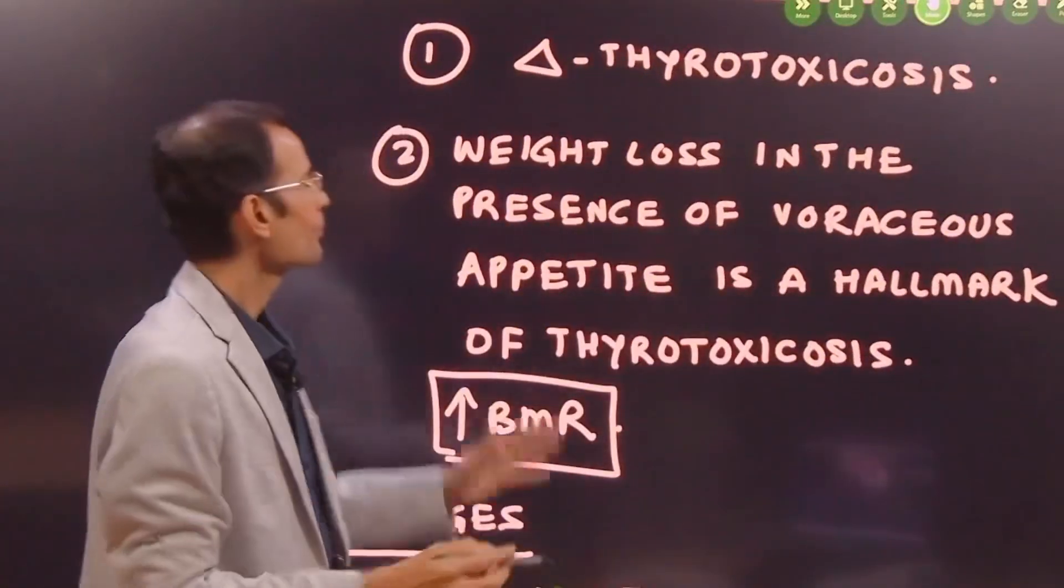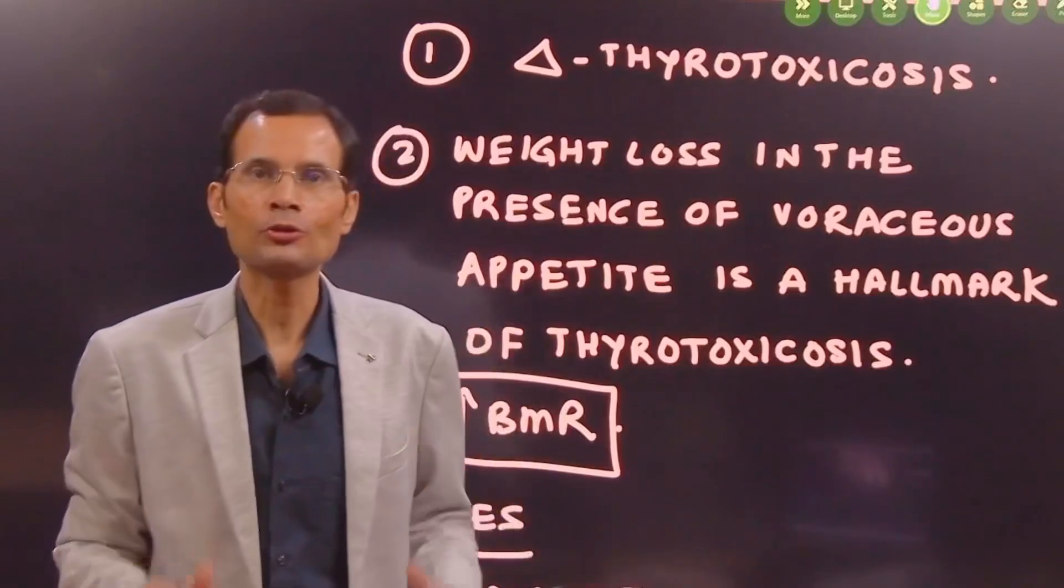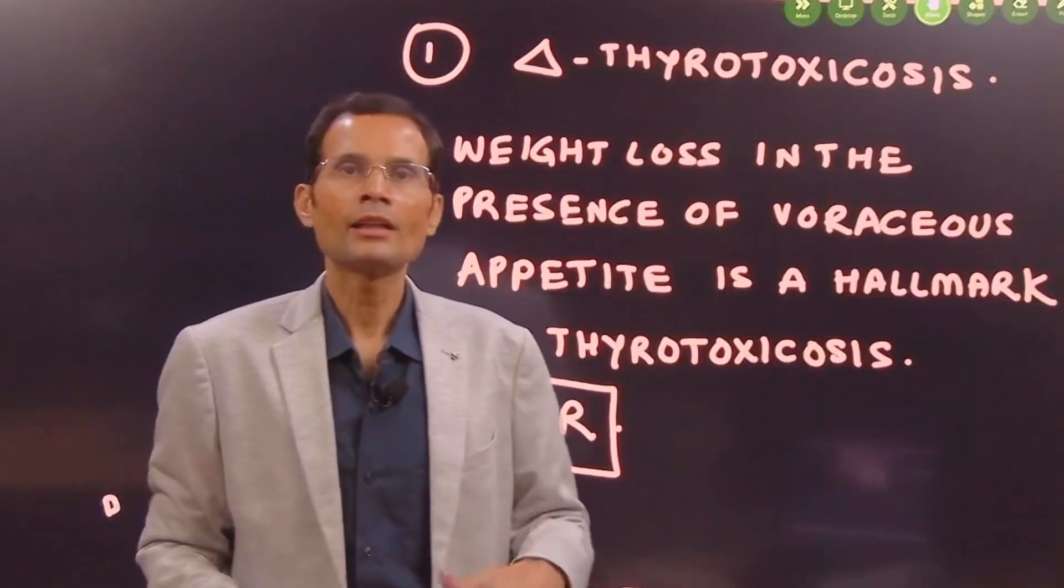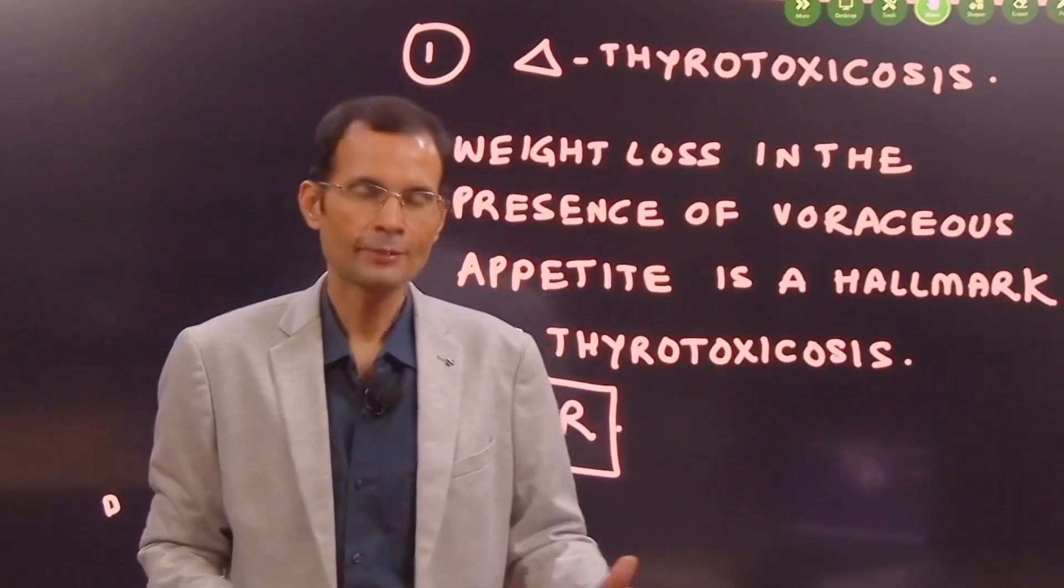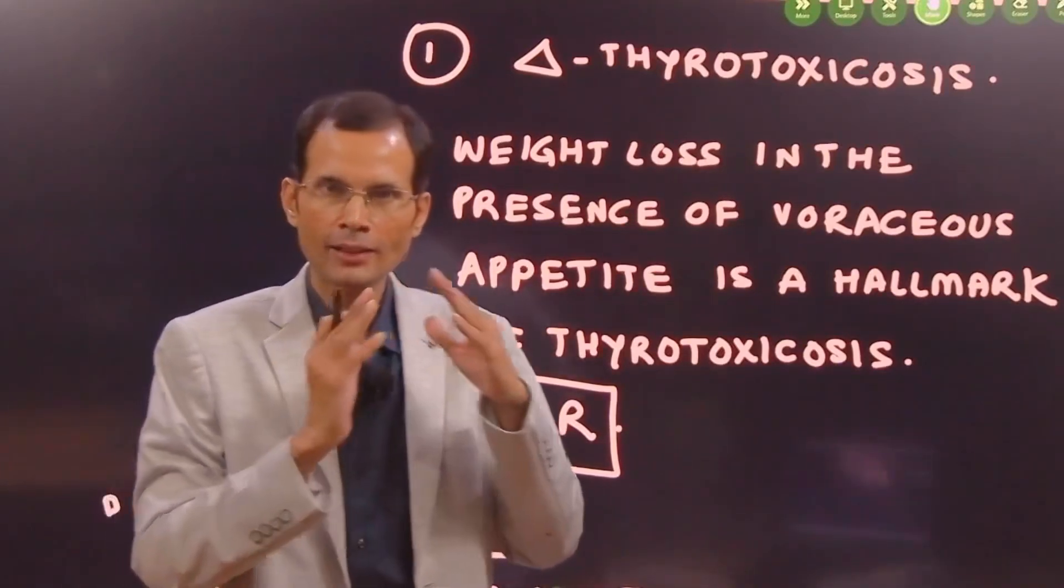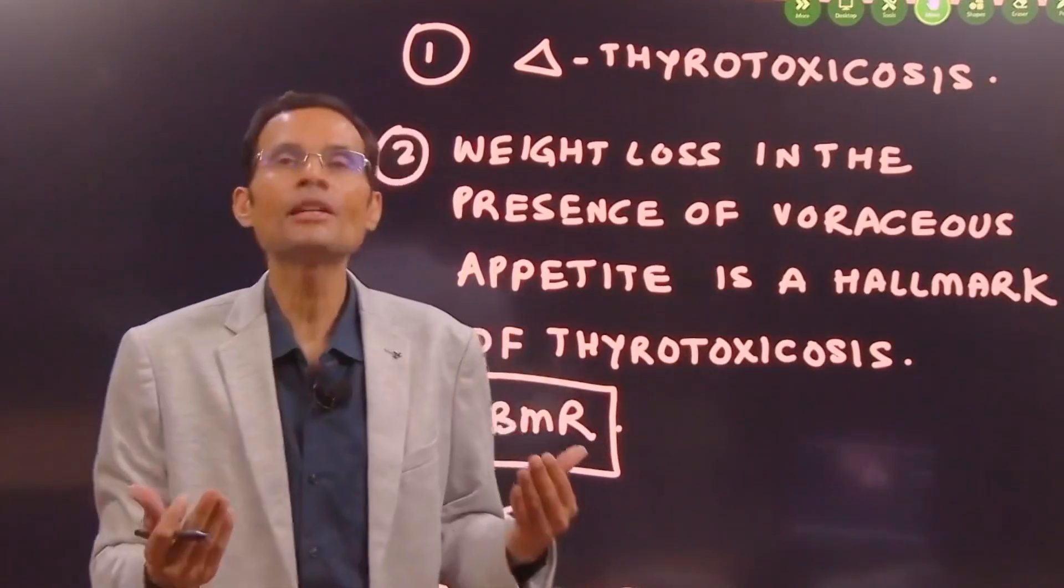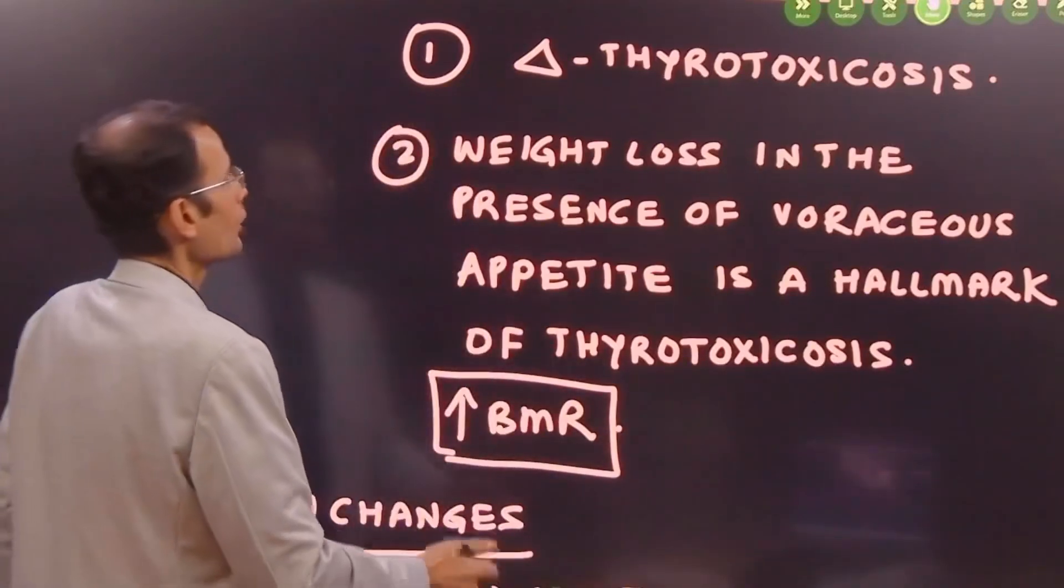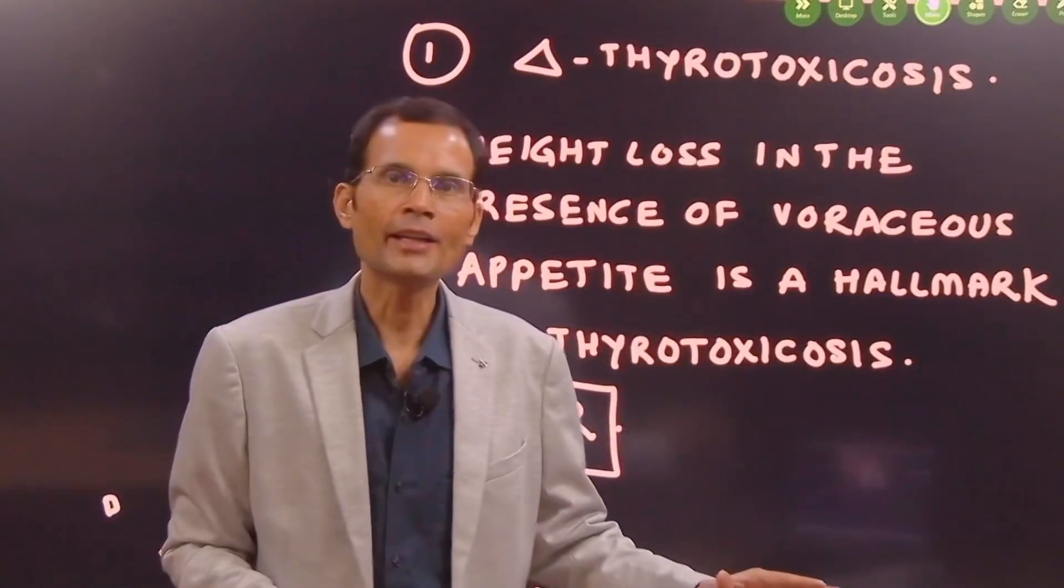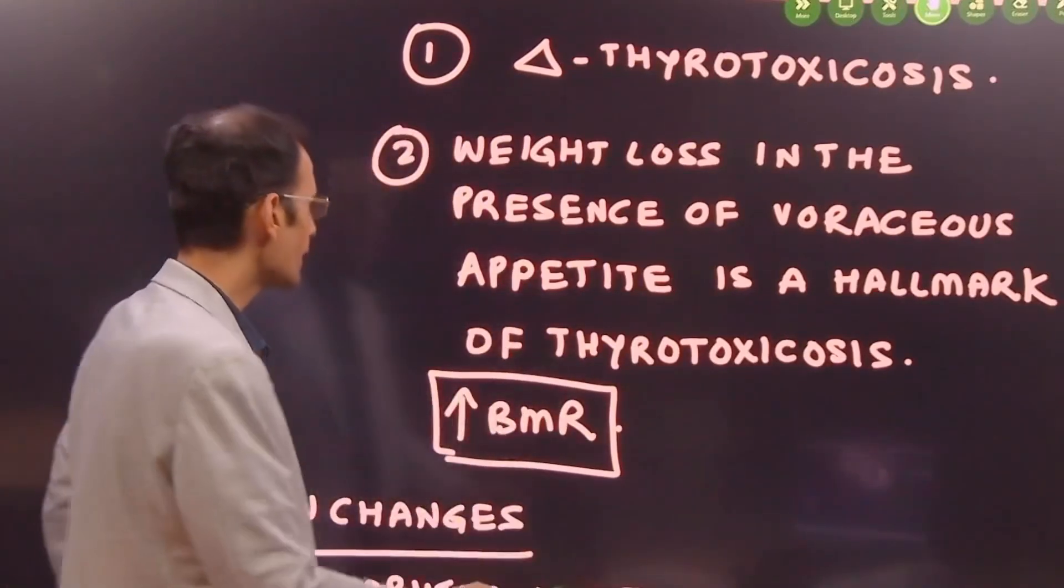Weight loss in the presence of voracious appetite is a hallmark of thyrotoxicosis. Now, there is hyperthyroidism and associated with toxic manifestations. That is what is called as thyrotoxicosis. So what we should keep in mind is the increased thyroxine secretion. There is hyperthyroidism and most of the manifestations can be explained on the basis of this. But remember this fact, increased appetite, but loss of weight.